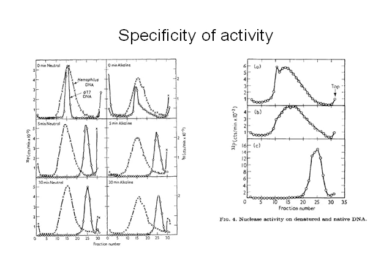The figure on the left shows the sucrose sedimentation plots of phage and bacterial DNA after digestion, with phage DNA appearing in a higher fraction because of its small pieces. The figure on the right, from top to bottom, shows single-stranded DNA without enzyme, single-stranded DNA with enzyme, and double-stranded DNA with enzyme in a sucrose gradient.